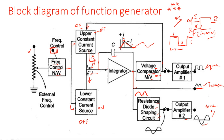To summarize: when the upper constant current source is on, the capacitor charges to a predetermined level set by the comparator. When it reaches that level, the comparator switches state from 1 to 0, turning the upper source off and lower source on, causing the capacitor to discharge. This process repeats continuously, generating sine, square, and triangular waveforms.